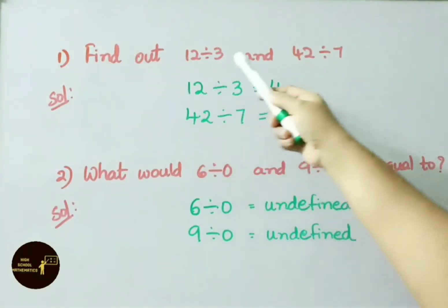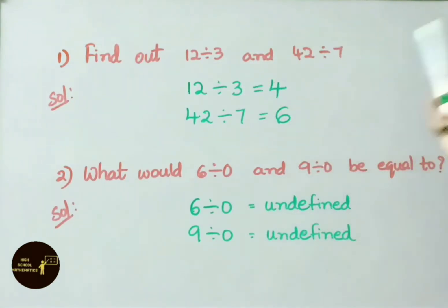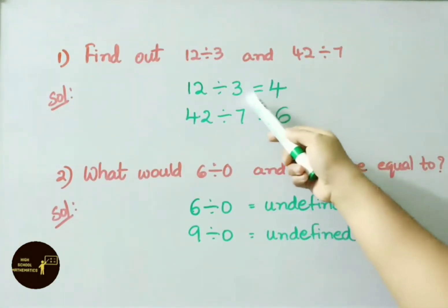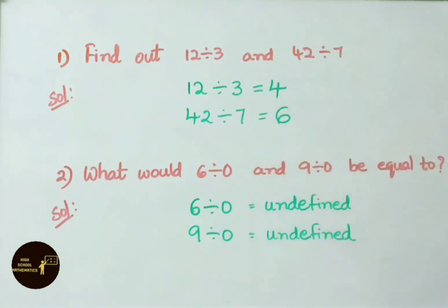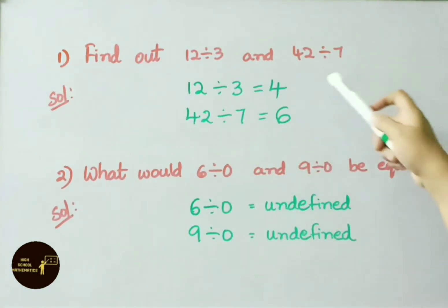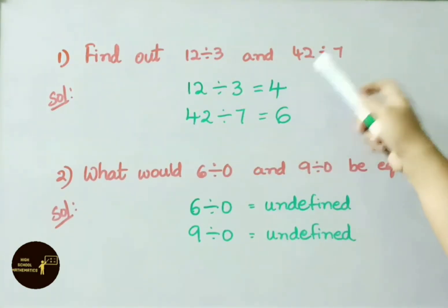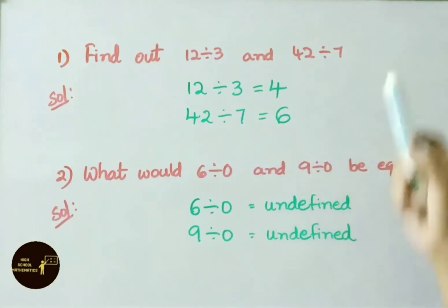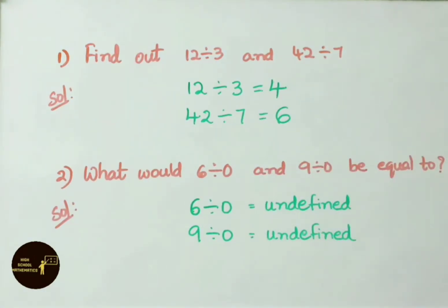Find out 12 divided by 3 and 42 divided by 7. 12 divided by 3 — using the 3 times table, 3 goes into 12 four times, so the answer is 4. For 42 divided by 7 — using the 7 times table, 7 goes into 42 six times, so the answer is 6.